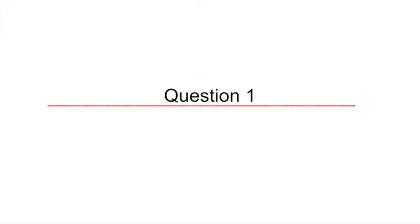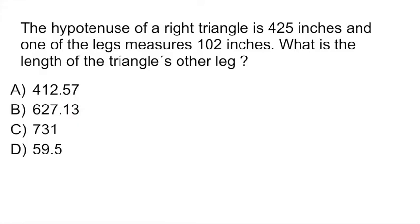Question 1 is a geometry question that requires you to remember a little bit about the Pythagorean theorem, something that sometimes comes up in the geometry portion of the GED test. The hypotenuse of a right triangle is 425 inches and one of the legs measures 102 inches. What is the length of the triangle's other leg?